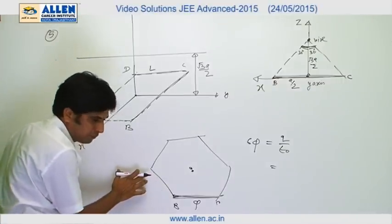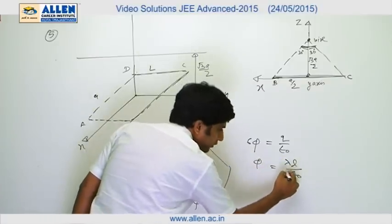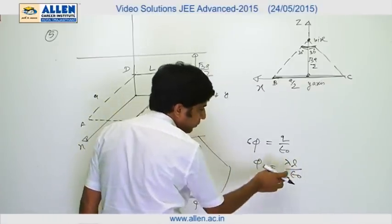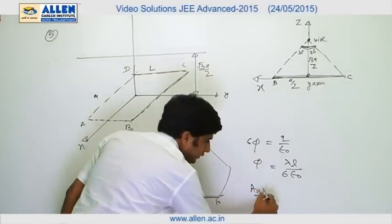3 alpha phi is lambda l upon 6 epsilon naught. By comparing this with the flux given in the question, the answer is 6.